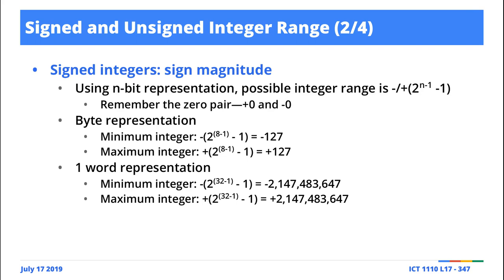Using sign magnitude, there's a formula. The range of signed integers you're going to work with is positive or negative two to the power n minus one. We know why: using sign magnitude, the leftmost bit has to be the sign bit, meaning the number of potential values we can work with shrinks. It doesn't matter which bit representation you're using — byte, half-word, word, or double word — just plug in the numbers. It's n minus one because one bit is reserved for the sign.